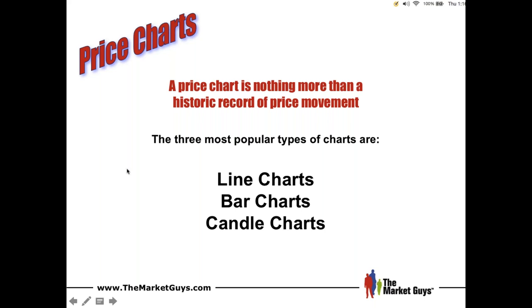This is also known as supply and demand. When there is more demand for a stock than supply, prices start to go up — that's called support. When there's more supply than demand, prices go down. When these price levels built up — supply and demand, support and resistance — we could know ahead of time what the buyers and sellers were most likely to do with that price level.